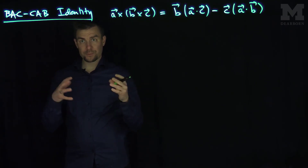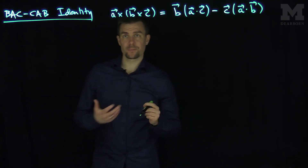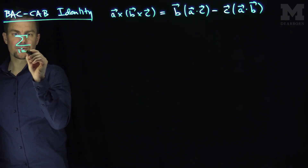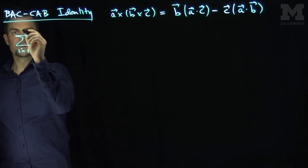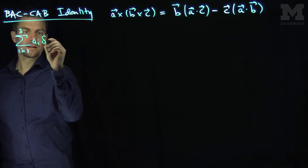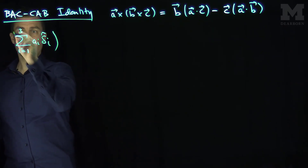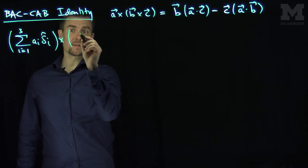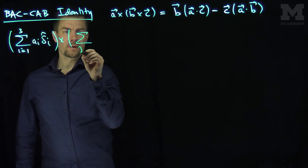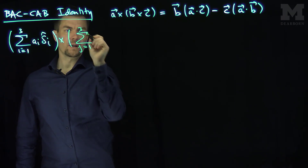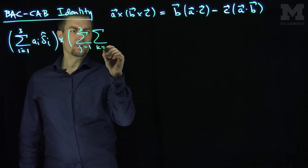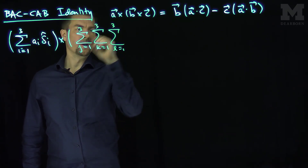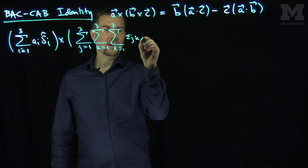This tells you how you do the cross product in sequence. So let's prove this. Vector a is going to be the sum, i goes from 1 up to 3, of ai times delta-i hat. I'm going to cross this with the cross product of b and c. The cross product of b and c requires three indices; it's going to be the sum j goes from 1 to 3, the sum k goes from 1 to 3.